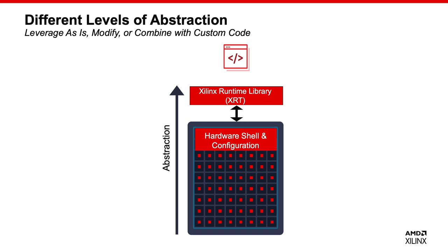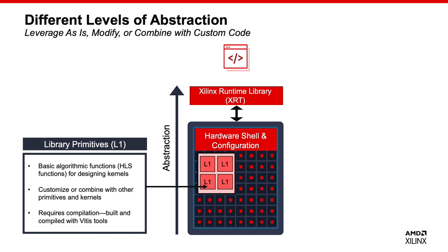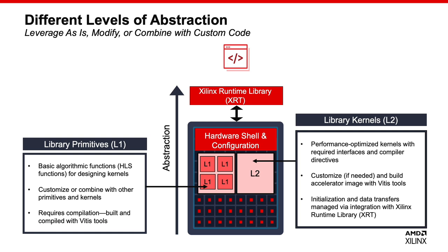VITES libraries offer different levels of abstraction to give you the accessibility you need. The lowest level are the library primitives, what we call L1 functions — the smallest building blocks, functionality from Xilinx and curated kernels. For those familiar with HLS, you can think of them as individual HLS functions. You can customize and combine multiple L1 functions together to form a kernel. Next come the library kernels, L2 functions, designed as individual performance-optimized kernels. You can combine multiple L2 functions to form end-to-end code, and also build L2 kernels using test cases for software emulation and hardware emulation in VITES.